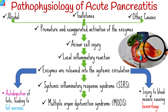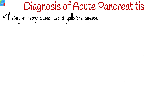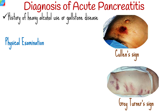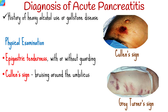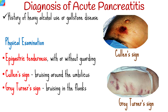Your healthcare provider may suspect acute pancreatitis based on presenting symptoms and history, which includes risk factors such as heavy alcohol use or gallstone disease. The healthcare provider will do a physical exam, which may show epigastric tenderness with or without guarding. Rare signs include Cullen's sign, which is bruising around the umbilicus, and Gray-Turner's sign, which is bruising in the flanks — both representing retroperitoneal hemorrhage. Tetany may occur from hypocalcemia.